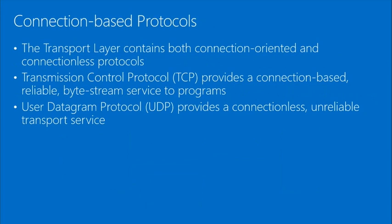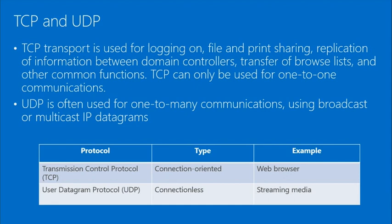The transport layer contains both TCP — Transmission Control Protocol, which provides a connection-based system — and UDP, which provides a connectionless, unreliable transport system. TCP transport is used for logging in, file and print sharing, and replication — basically when you need acknowledgment. UDP is used for one-to-many communications, broadcast, multicast, IP datagrams, and audio streaming — things that don't need to be acknowledged.